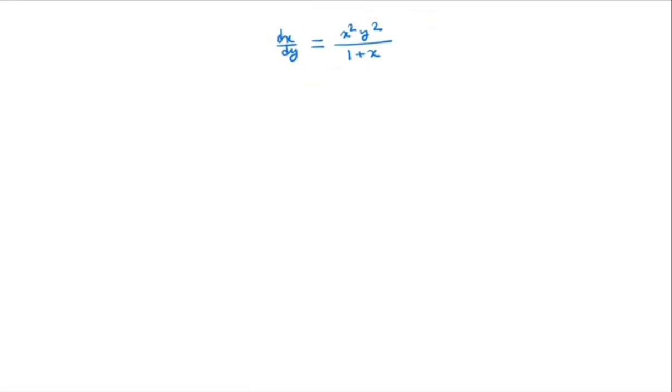Note that the right hand side we can write as x squared divided by 1 plus x times y squared. That means this right hand side is a separable function. So we can separate x and y in this equation.